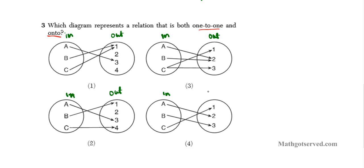For a relation to be onto, for every output you must have an input pointing to it — it doesn't have to be exactly one input. Let's take a look at option 1. Do we have an input pointing to every output? Output 1 has two inputs pointing to it — good. But output 2 doesn't have anything pointing to it, so this function is not onto. This fails automatically.